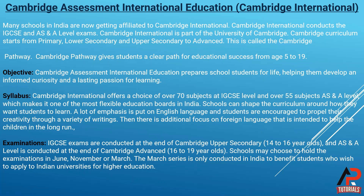Cambridge International offers a choice of over 70 subjects at IGCSE level and over 55 subjects at AS and A level, which makes it one of the most flexible education boards in India. Schools can shape the curriculum around how they want students to learn.